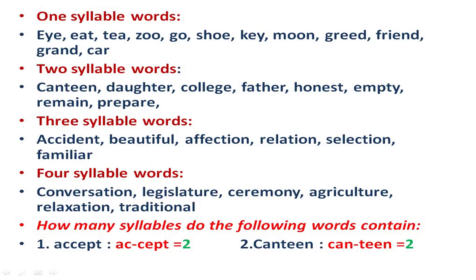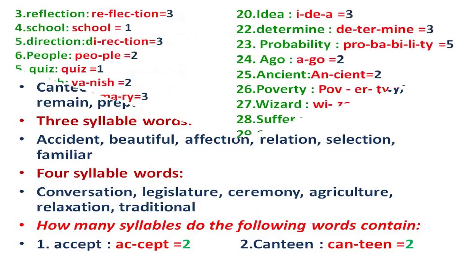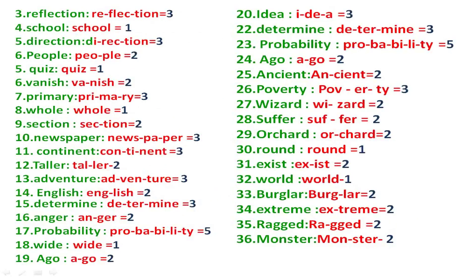Now let's find out how many syllables the following words contain. 'Accept' — two syllables. 'Canteen' — two syllables: can + teen. 'Reflection' — three syllables. 'School' — only one syllable. Use the chin method to count easily. 'Direction' — three syllables. 'People' — two syllables.